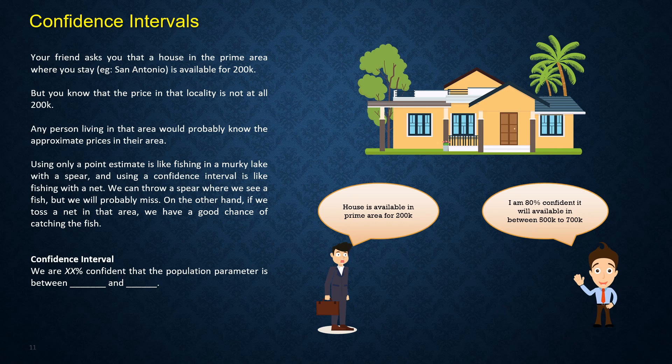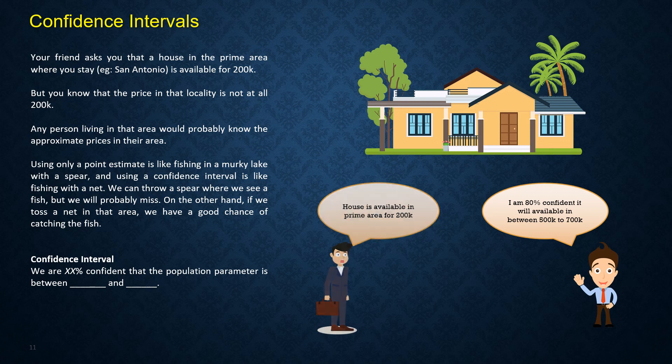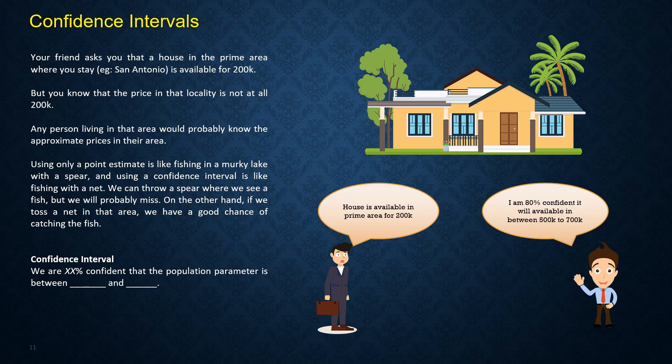Let's say your friend inquires you about a house in the prime area where you stay, is available for $200,000. But you know that the price in that locality is not even close. As per your knowledge, you may know that it is anywhere between $500,000 to $700,000.